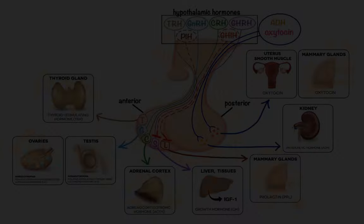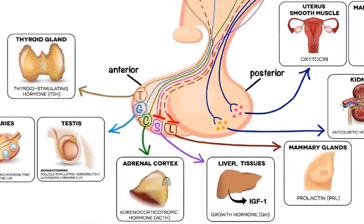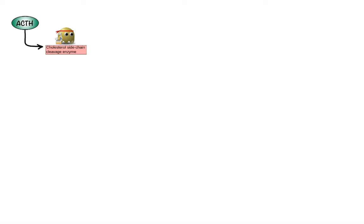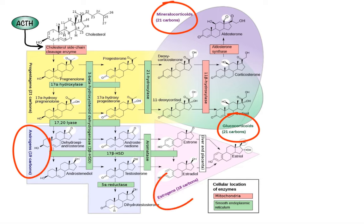Moving on to our next pharmacological target, the adrenal cortex. The main action of adrenocorticotropic hormone on the adrenal cortex is to stimulate the synthesis and release of adrenocortical and androgen hormones. Specifically, inside the cells of the adrenal cortex, stimulation by ACTH activates cholesterol side-chain cleavage enzyme, which catalyzes the conversion of cholesterol to pregnenolone, the precursor of all adrenocortical hormones including mineralocorticoids, glucocorticoids, androgens, and estrogens.